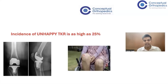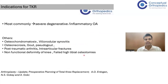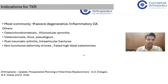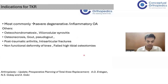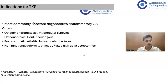With this background, let us start analyzing what are the important things to prevent this unhappy TKR. The most common indication for TKR is severe degenerative or inflammatory osteoarthritis. Other indications include osteochondromatosis, villonodular synovitis — these are synovial pathologies — as well as osteonecrosis, metabolic conditions like gout and pseudogout, and post-traumatic arthritis of the knee.